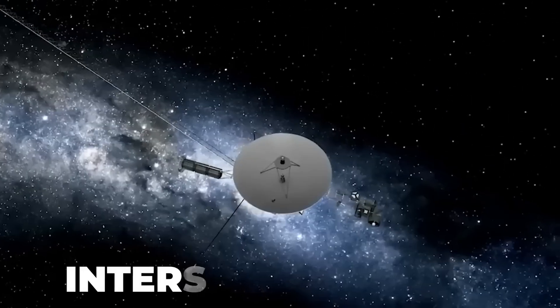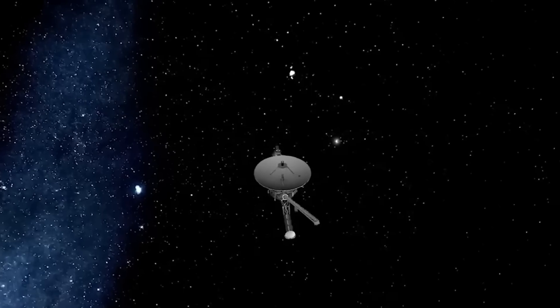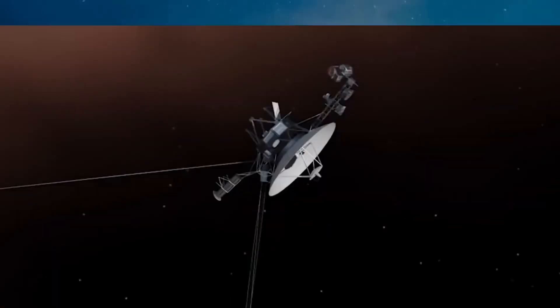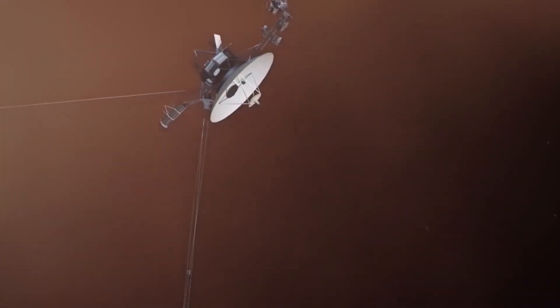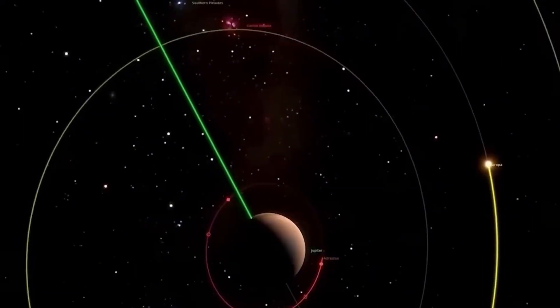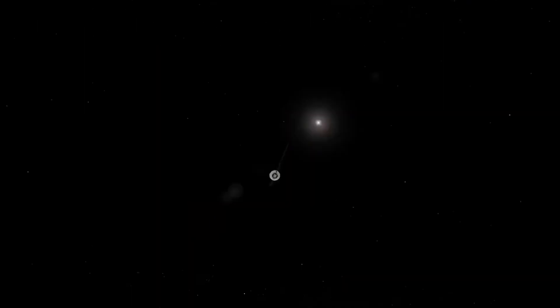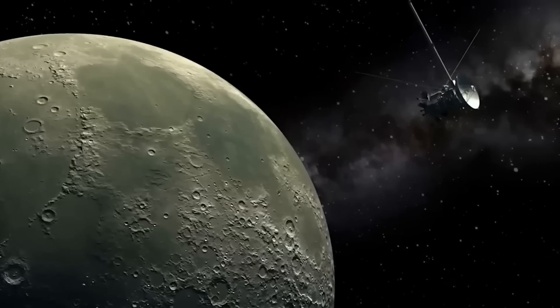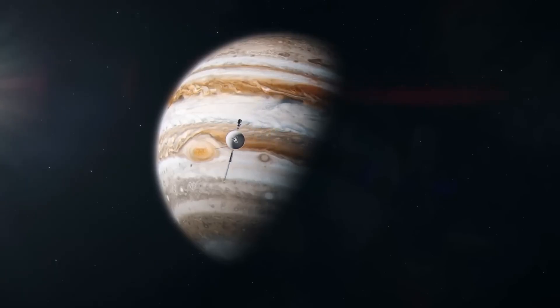After exploring Jupiter, Voyager 1 continued through the solar system, reaching Saturn in 1980, where it made equally fascinating discoveries about Saturn, its moons and its massive ring system. One notable discovery was the identification of new moons around Saturn, adding to the known list of its natural satellites. These moons varied in size and composition, adding to the knowledge of Saturn's moon system.